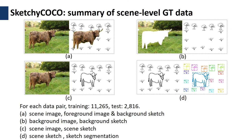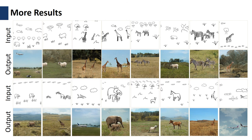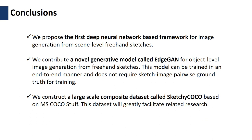Here we show some typical results with the size of 256 by 256, as well as some more results at the same resolution. The main contributions of our work include the first deep neural network based framework for image generation from scene-level freehand sketches, a novel generative model for object-level image generation called EdgeGAN, and a composite dataset SketchICACO.